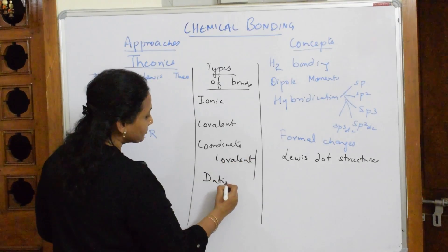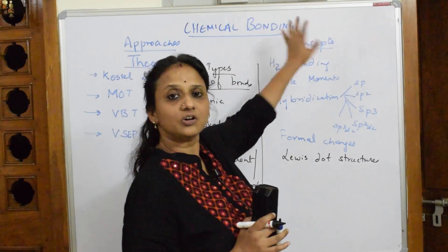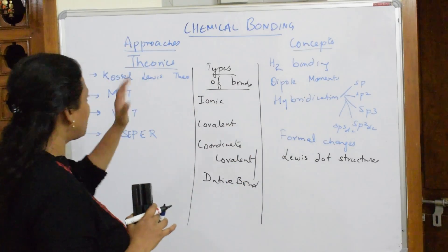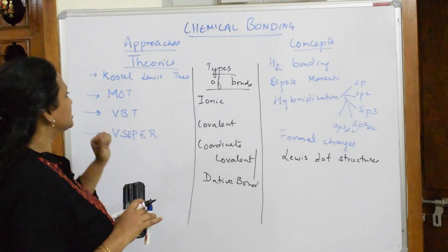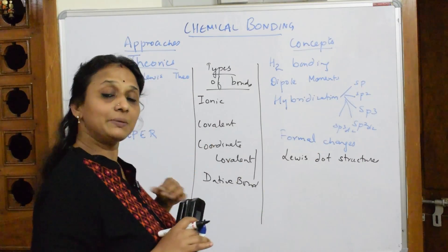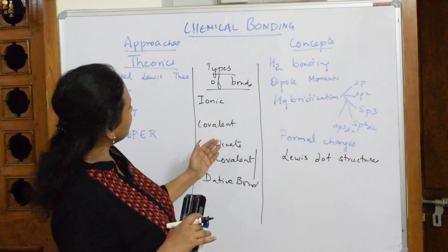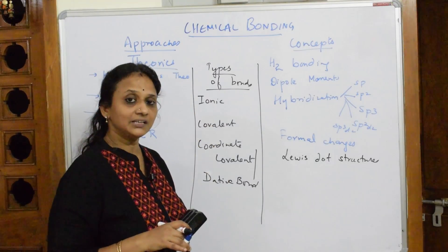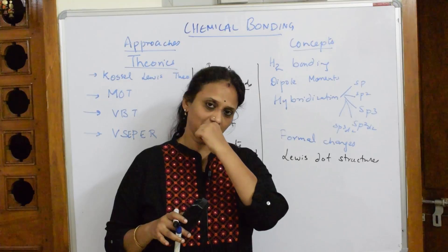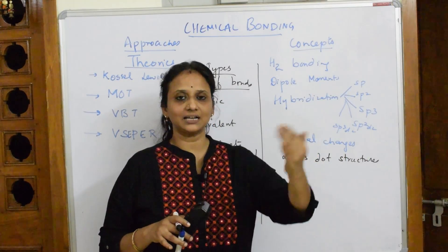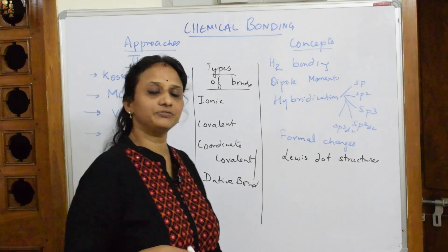To summarize the whole chapter: it is divided into theories, concepts, and types of bonds. I'll be going into detail on every concept and every theory — not page by page from NCERT, but topic by topic. When dealing with theories I'll cover all theories together, and similarly for concepts and types of bonds. This is important because each chapter has a certain exam weightage, and questions of one mark, two marks, three marks, and five marks are set accordingly. I'll meet you again with the theories of Chemical Bonding.